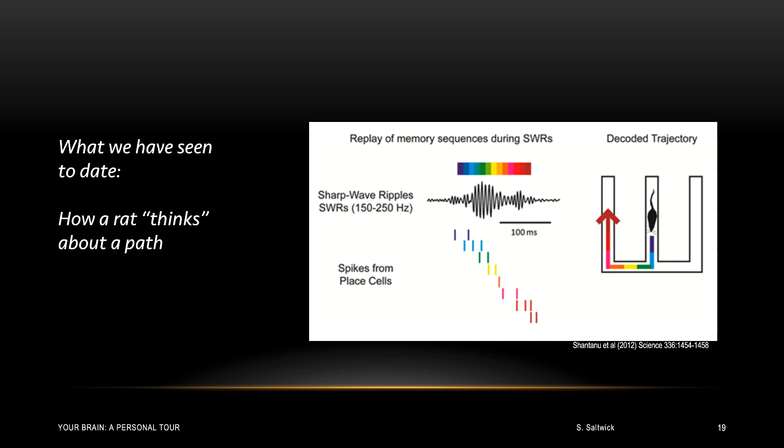On the bottom, a sequence of color-coded place cells within the short wave ripple decode the trajectory of the maze. Go purple, blue, green, yellow, orange, red. And that takes the rat through the maze.